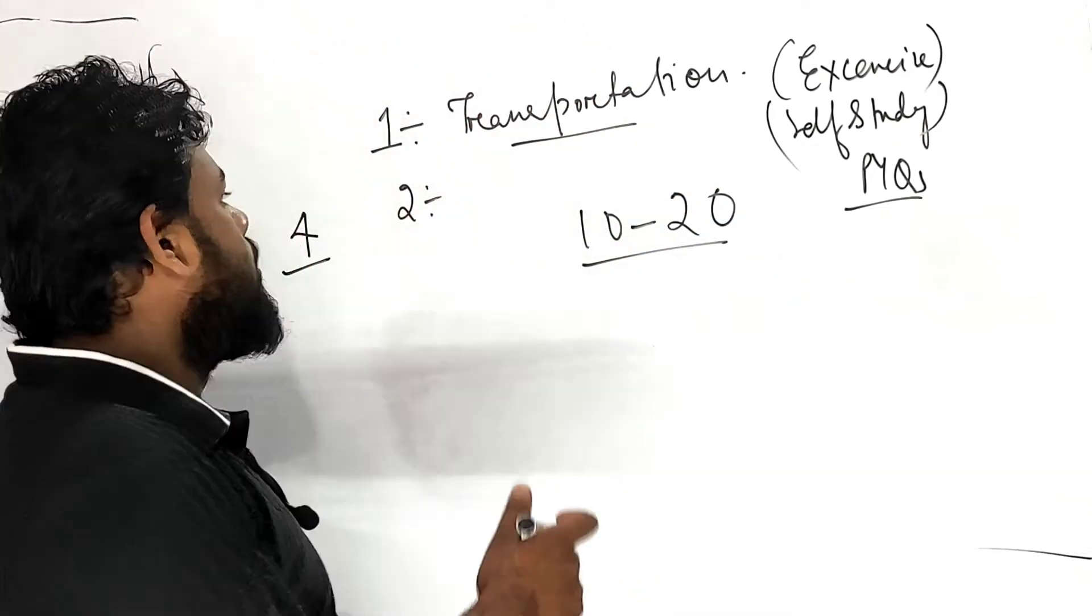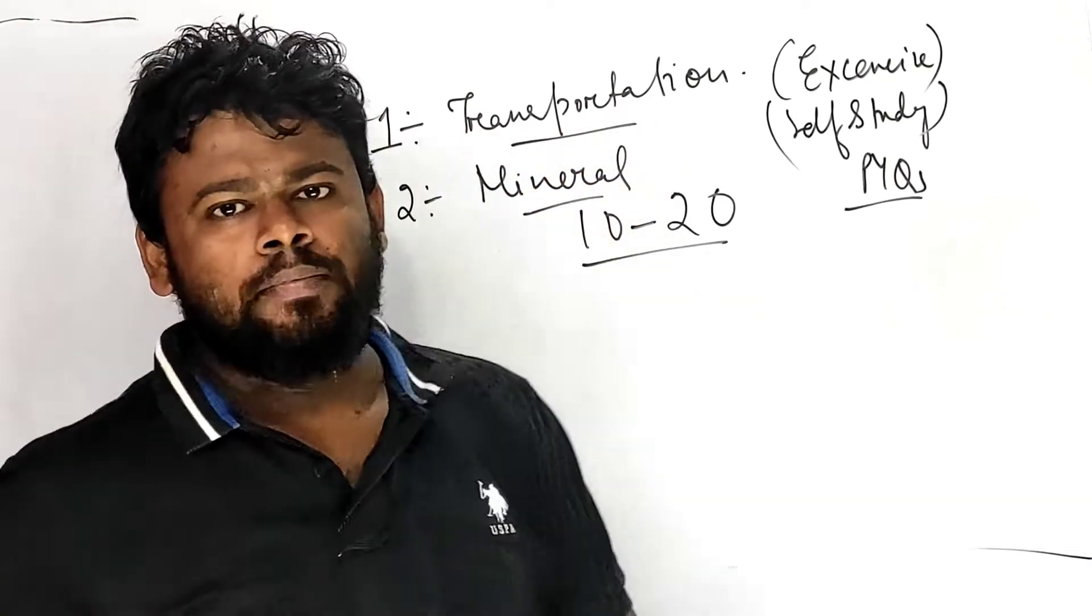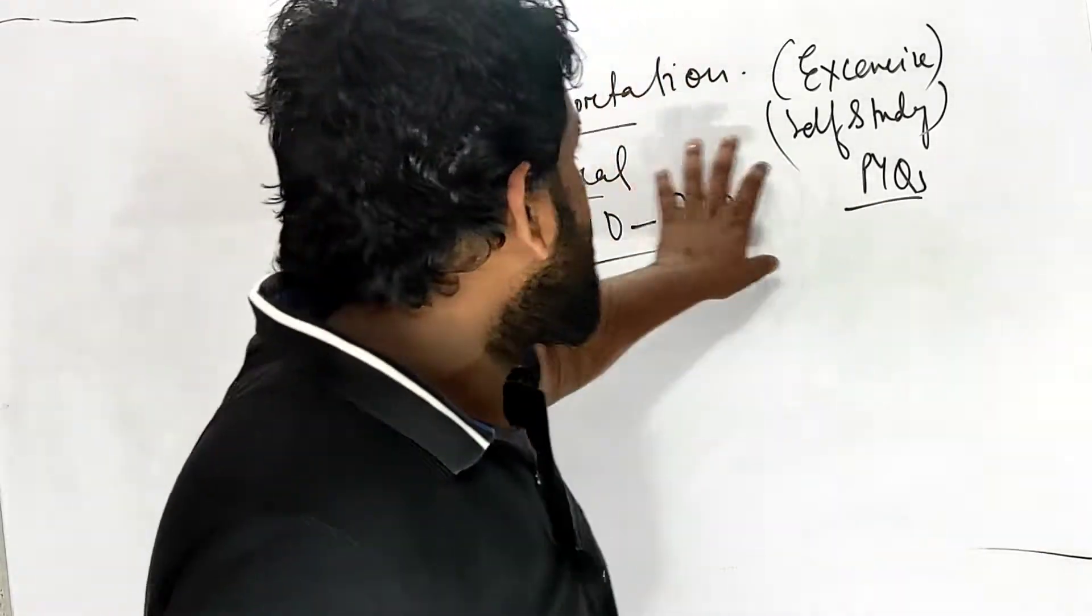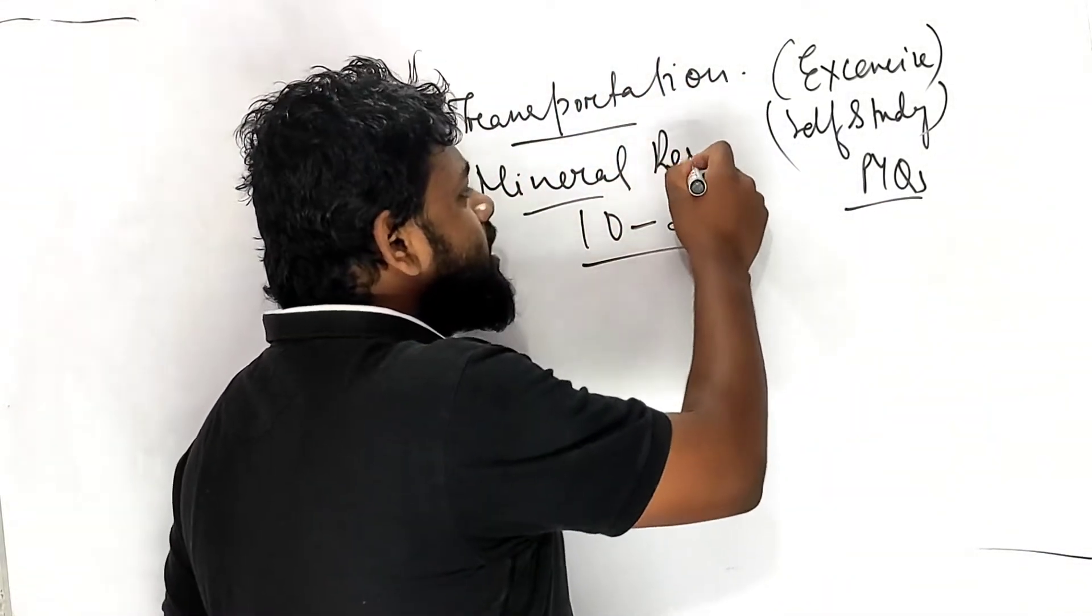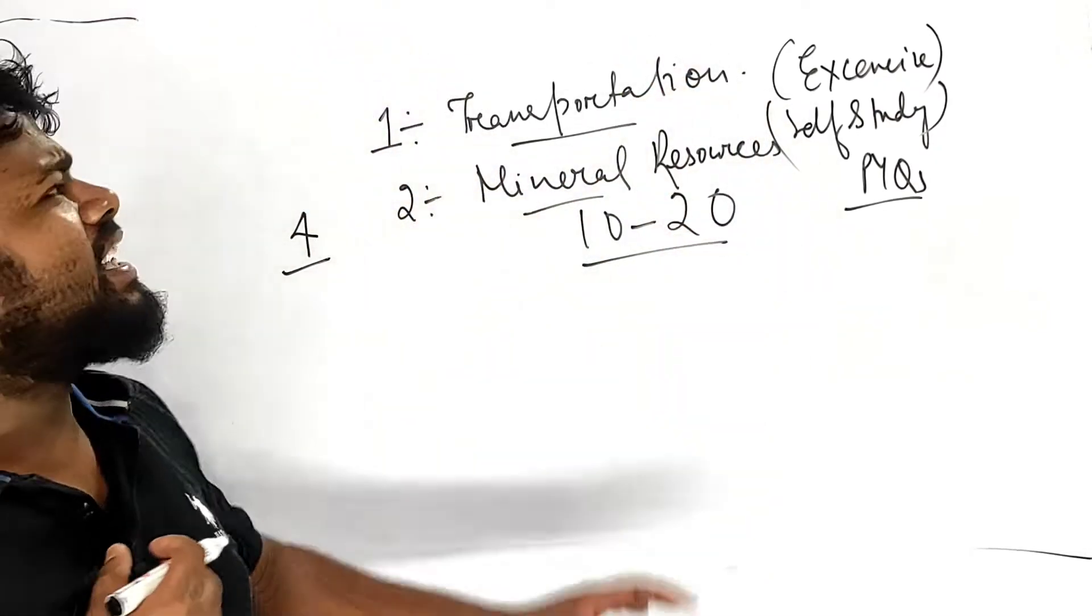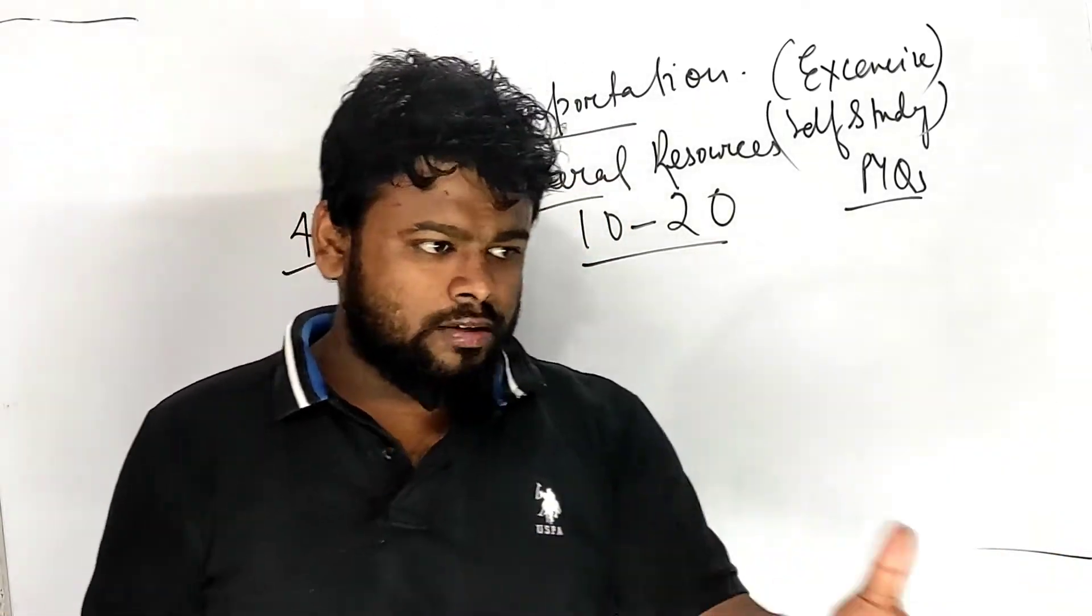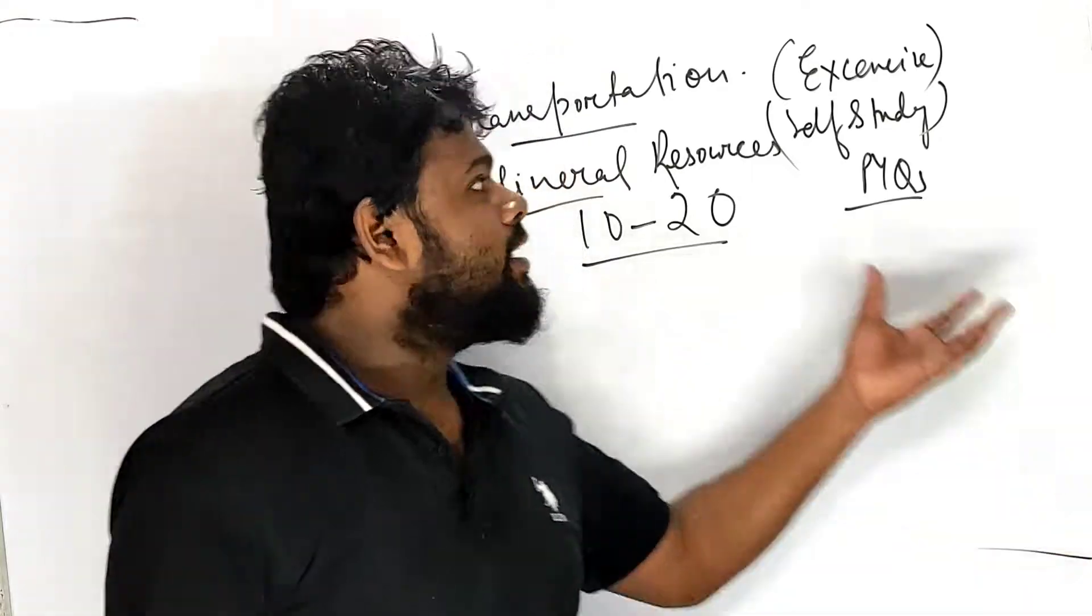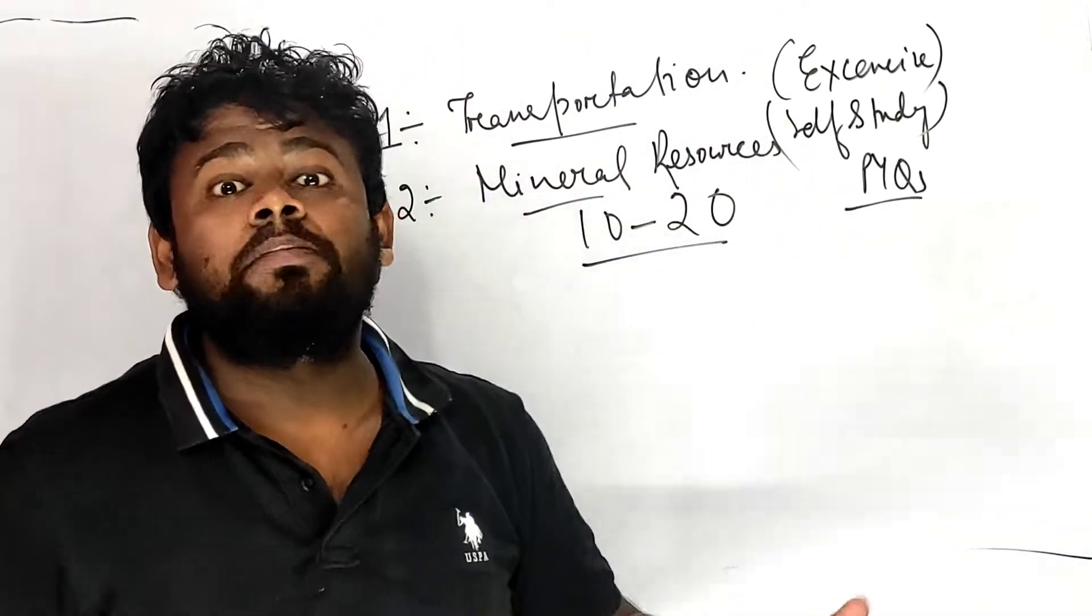Mineral Resources - in Goel Brothers somehow two chapters, in Evergreen the same. I personally think it's also one of the easiest chapters but not like Transportation. Transportation is easy because you are learning transportation from your secondary and primary standards. That's the reason it's becoming easy for you.